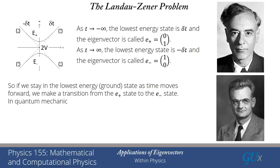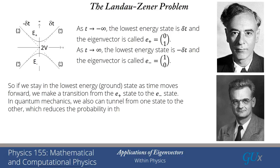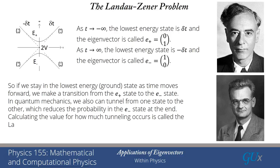In quantum mechanics, of course, we have this phenomenon called tunneling. We can actually tunnel from one state to the other, and that's going to reduce the probability that I would stay in the e-minus state at the end. You have to calculate the value for how much tunneling is going to occur — that's called the Landau-Zener problem. Landau got the problem solved correctly except he missed a factor of pi in the exponent. Zener found a way of mapping the problem onto a conventional, well-studied differential equation from mathematical physics, and he was able to immediately extract the answer from that mapping.